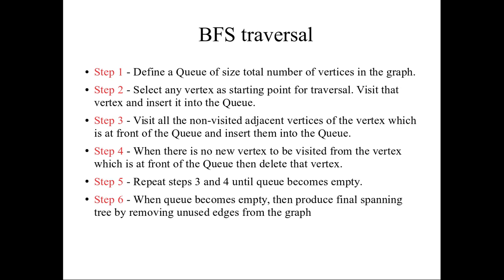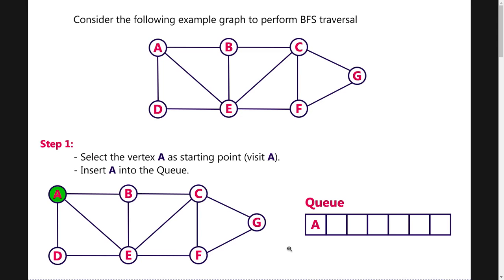Let's look at the breadth first search example. The graph has nodes A, B, C, D, E, F, and G. The first starting node is A. If we have 7 nodes, we will create a queue Q of that size.